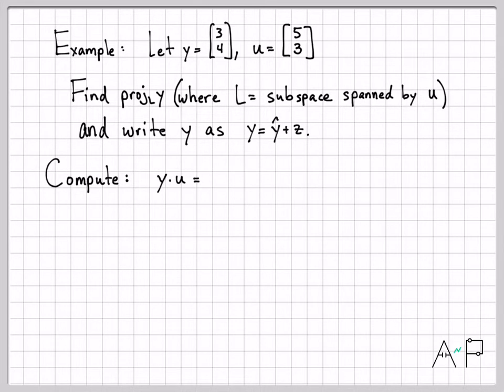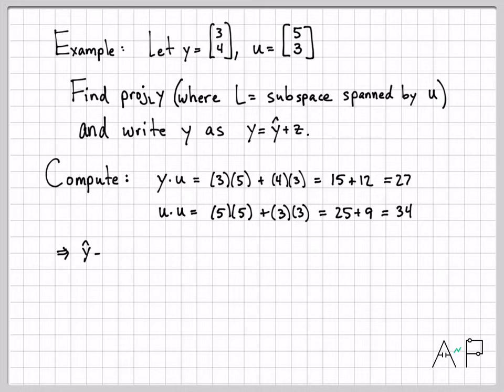I need to compute: the numerator is y·u. That's pretty easy: 3×5 + 4×3 = 15 + 12 = 27. And the denominator u·u is going to be 5² + 3² which gives me 34. So I can write ŷ as α times u, and alpha is the ratio of these two quantities, so that's going to be 27/34 times u. And then if I multiply that out I get [135/34, 81/34]. So kind of an ugly fraction, but I claim that this is the projection of y onto the subspace spanned by the vector u.